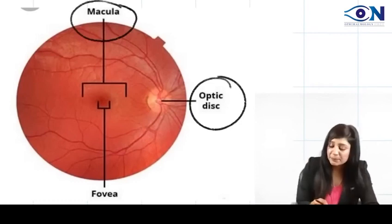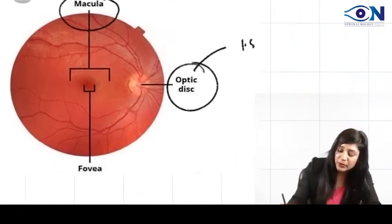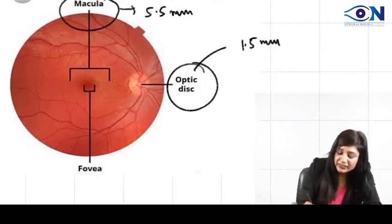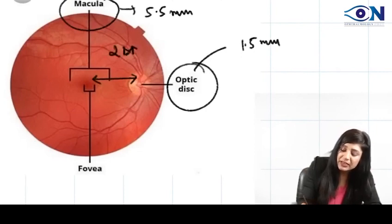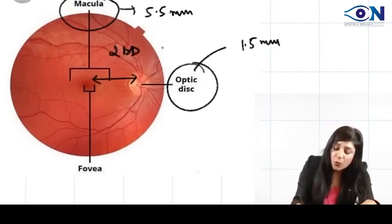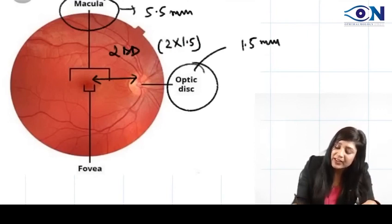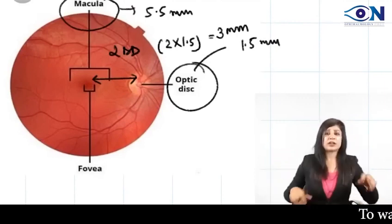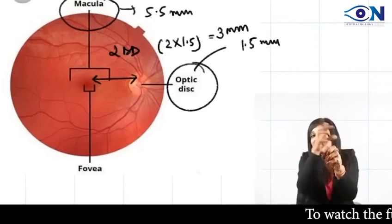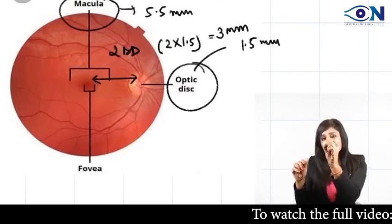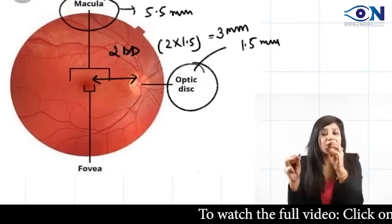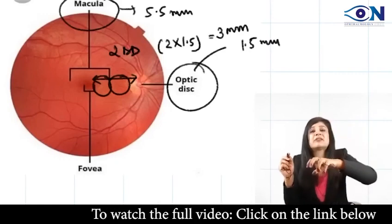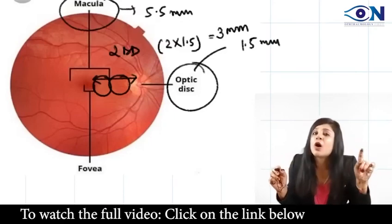When you look at the central retina, you see the optic disc and the macula. The optic disc is 1.5 mm while the macula is 5.5 mm. The distance between the two is two disc diameters — that is 2 × 1.5 = 3 mm. This distance is important for determining whether a lesion is near the macula: you should be able to fit two optic discs between the center of the macula and the optic disc.